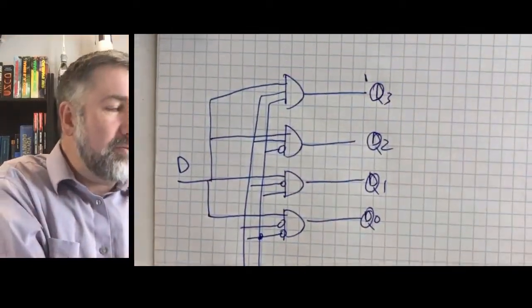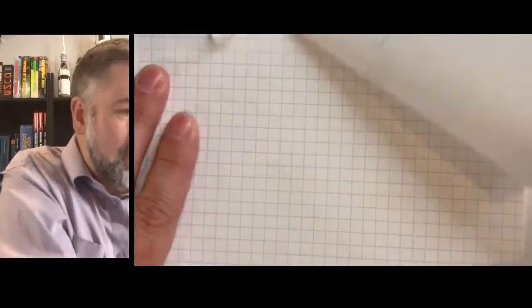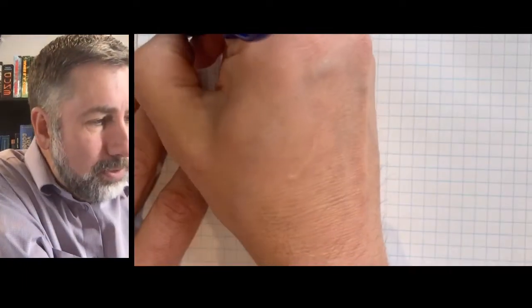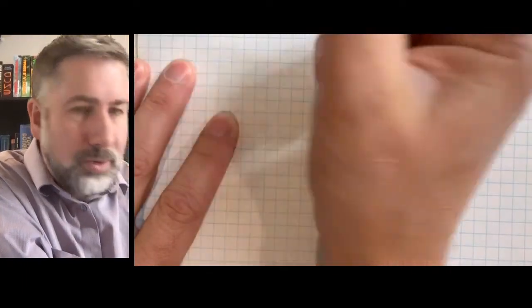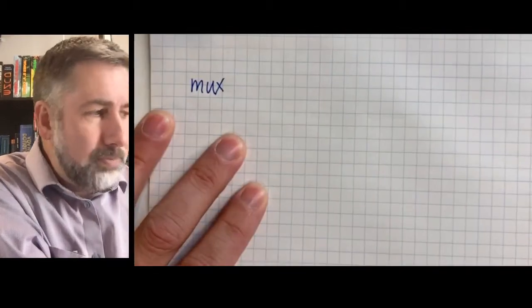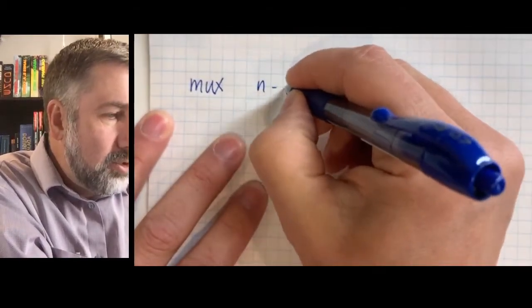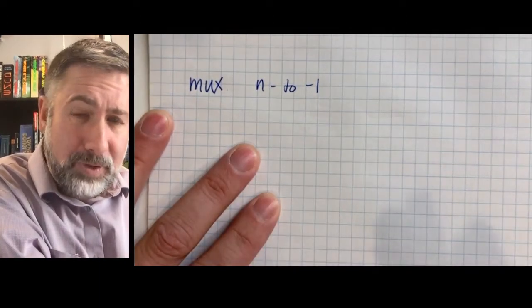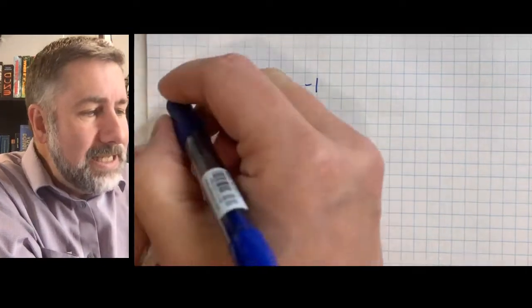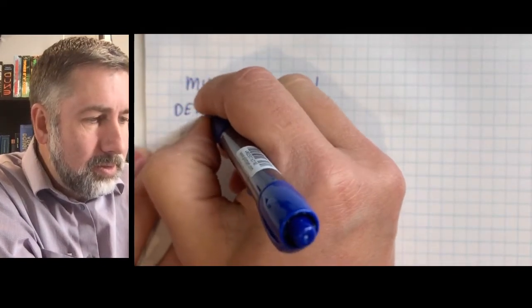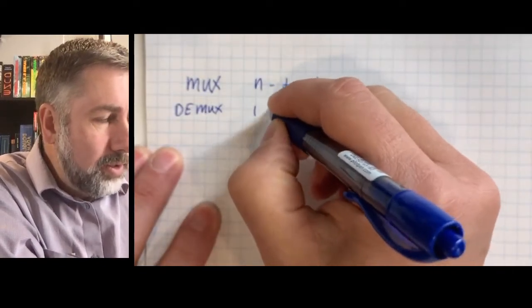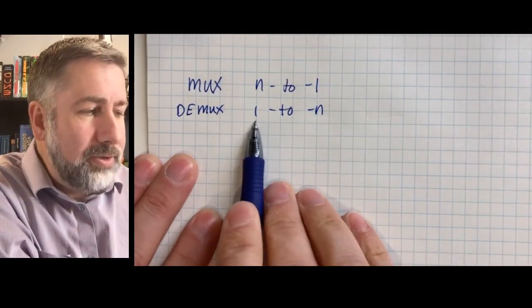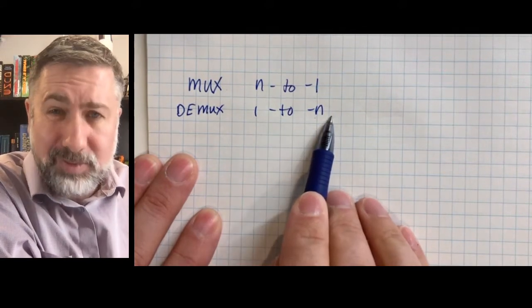So now we have these four devices. We have multiplexers, demultiplexers. I'm going to write these out. We have multiplexer which we abbreviate as mux and a multiplexer is from n to 1. We have a number of inputs and we have one possible output. A demultiplexer is from 1 to n. So this is if you have one input then you're going to route it to one of the n possible outputs.